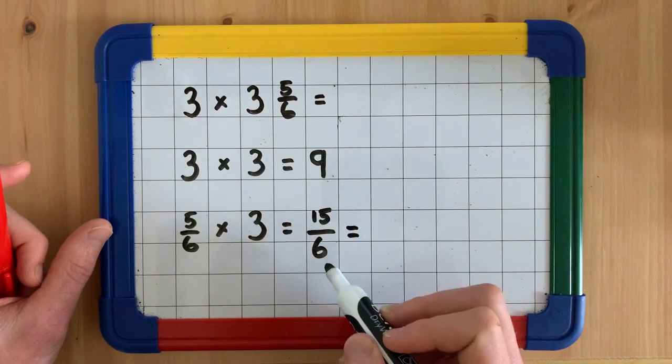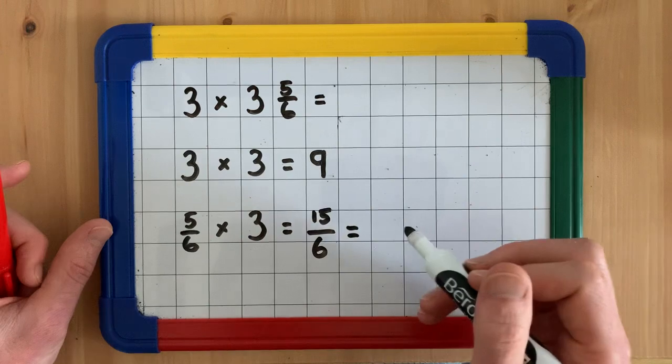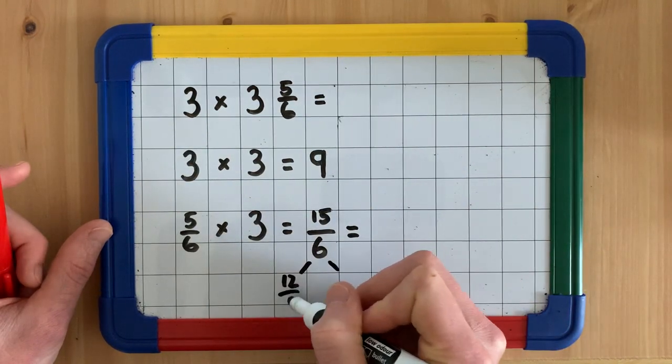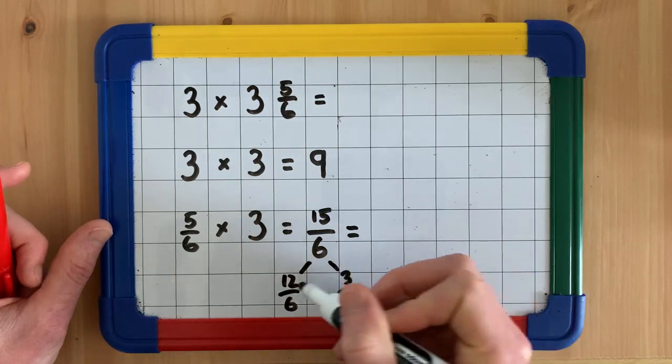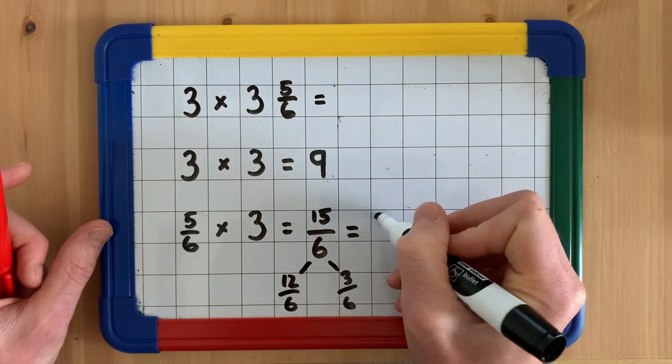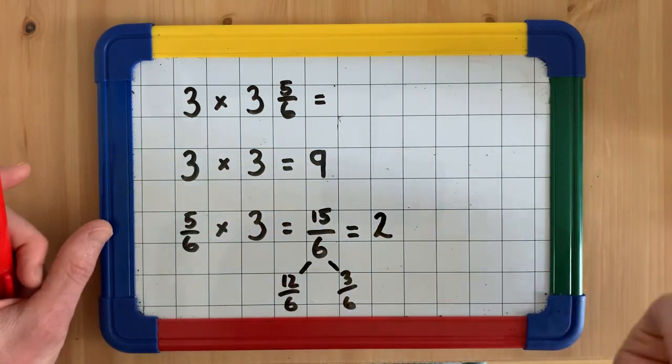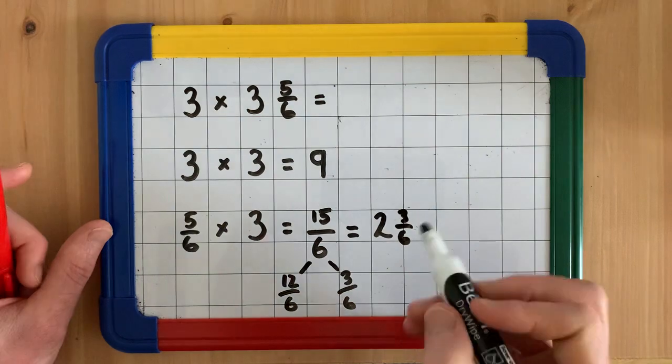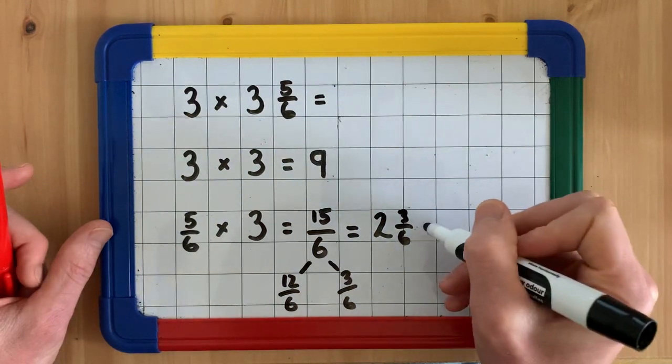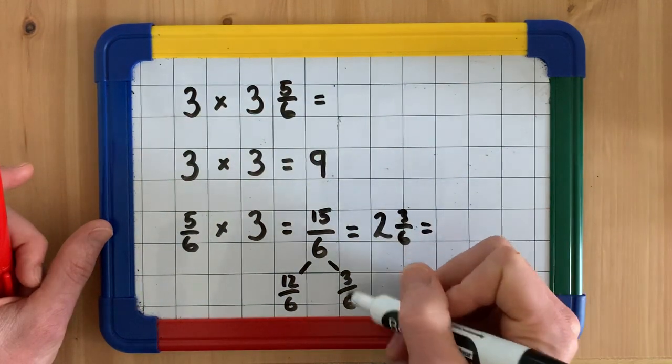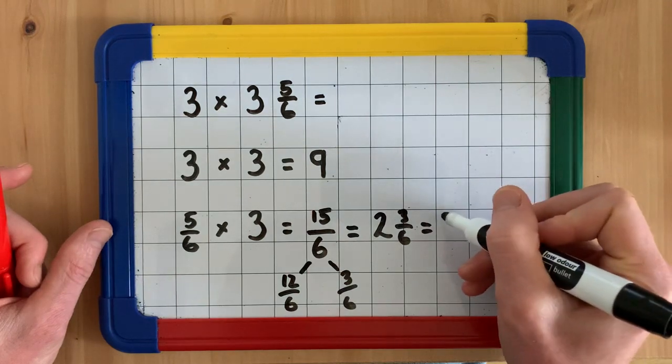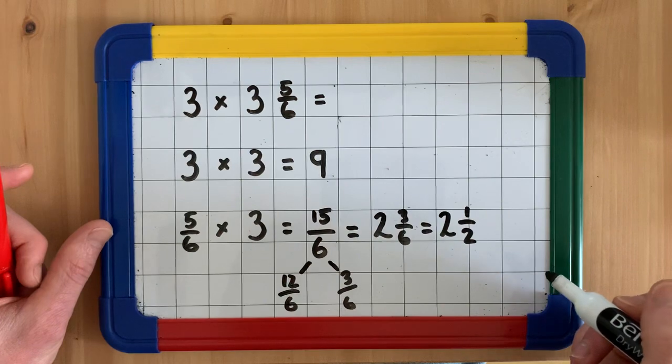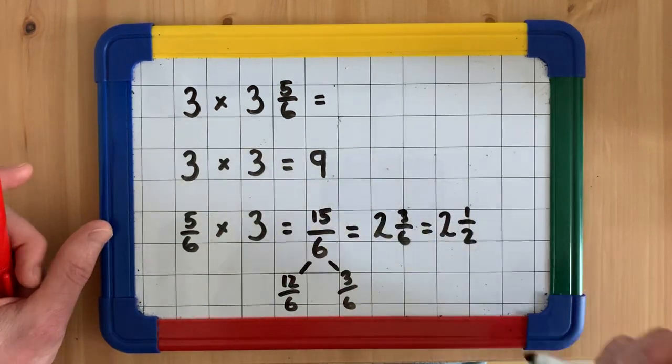So here we've got 15/6. 15/6 is made up of 12/6 and 3/6. Now 12/6 is two wholes, 6/6 and 6/6. And then we've got 3/6. Now, actually, we can simplify 3/6 to a half because if we divide both our numerator and our denominator by 3, we get a half. We get 1 and 2, so we'd get a half.